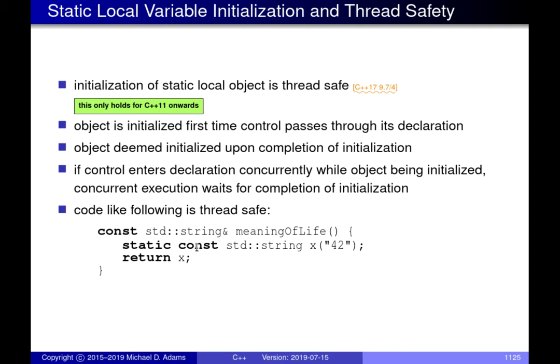A question you might ask is: what happens in a multi-threaded application where multiple threads might call this function? What if two threads call this function for the very first time at approximately the same time and both hit that line simultaneously? The language guarantees there won't be any data races. Whichever thread arrives first will initialize x, and the other one will wait until the first is done. So you can't have any data races arising from code like this.